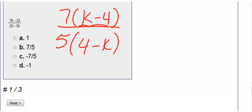If we look here, we have k minus 4 and 4 minus k. Notice they're opposites. When they are opposites, you can actually cross them off and put negative 1.